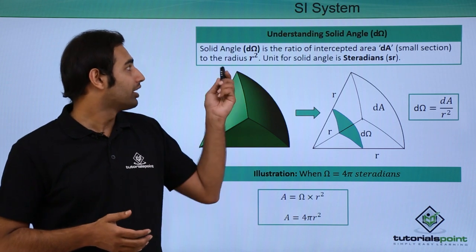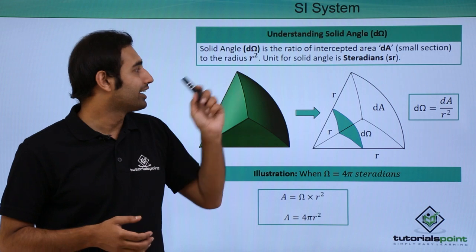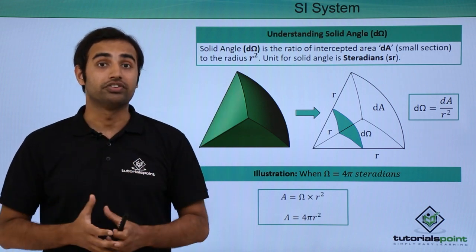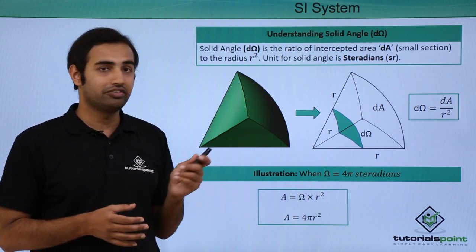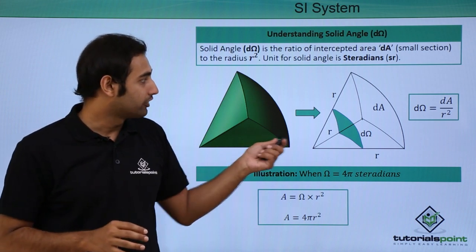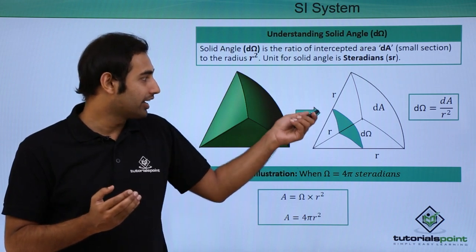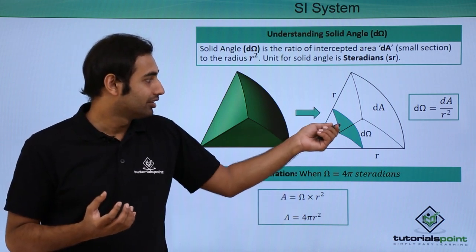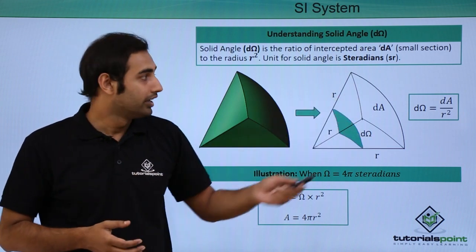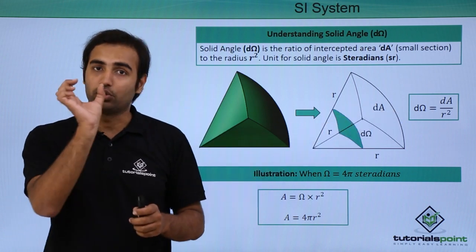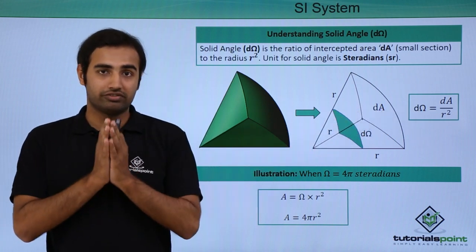Now let's talk about solid angle. Solid angle dΩ is the ratio of the intercepted area dA to the square of the radius r of a sphere — that's the most important part. Its unit is the steradian. Over here we have a sector of a sphere with a solid angle dΩ at the center and radius r, with an intercepted area dA on the surface. We define dΩ as dA upon r².